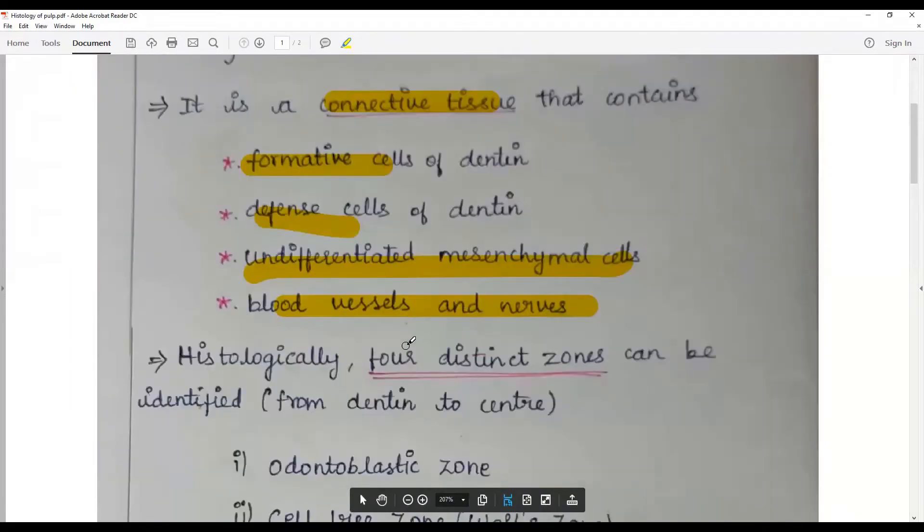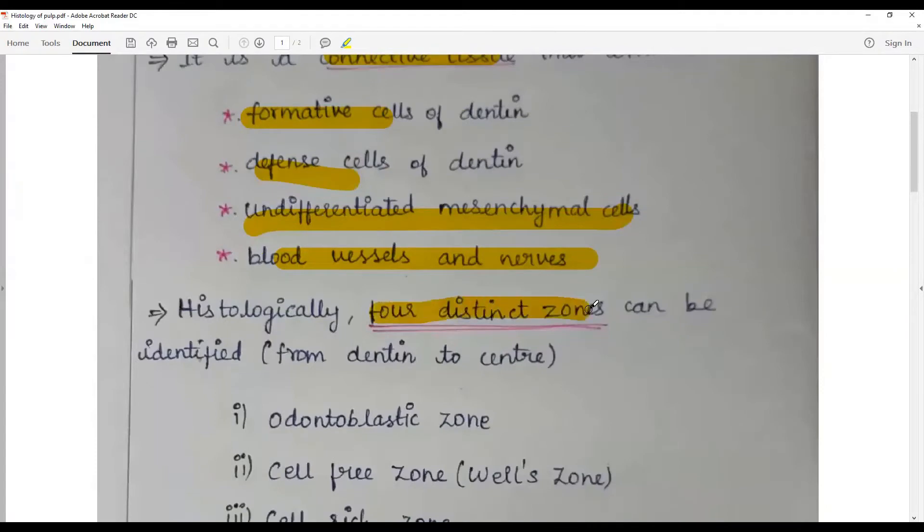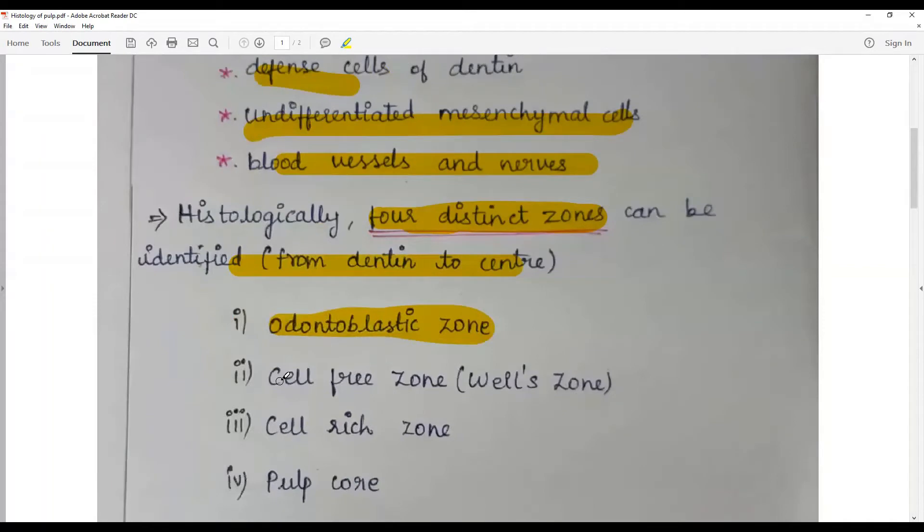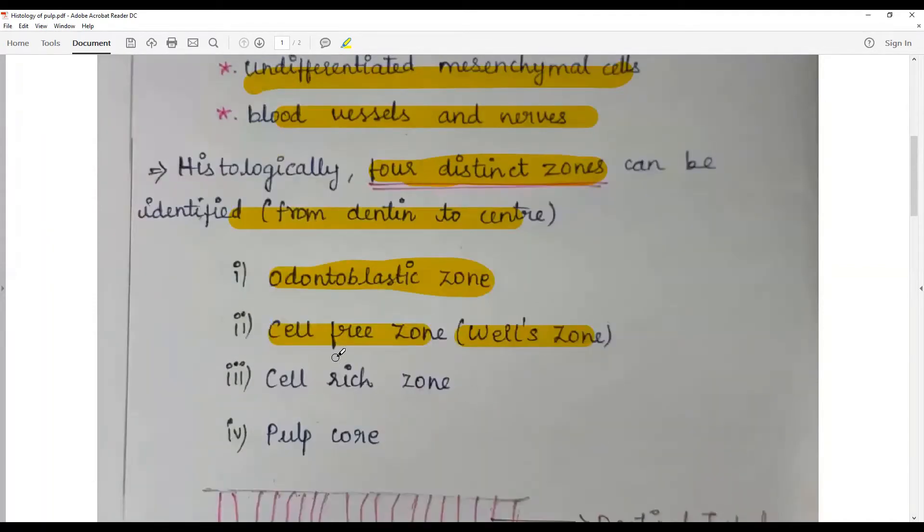Histologically, they are arranged in four distinct zones identified from dentin to the center. From nearest to the dentin is the odontoblastic zone, following which there is a cell-free zone also called Weil zone, then the cell-rich zone, and forms the pulp core.